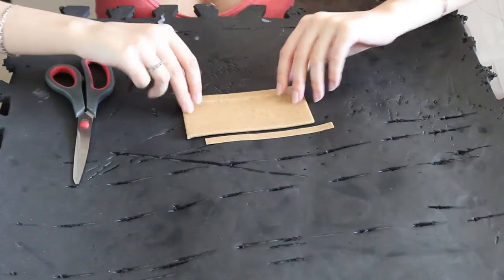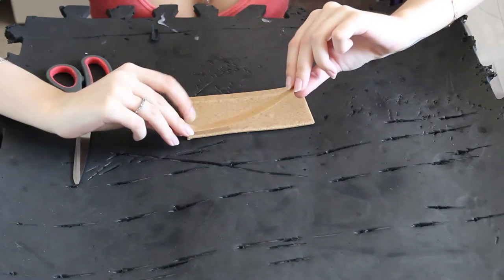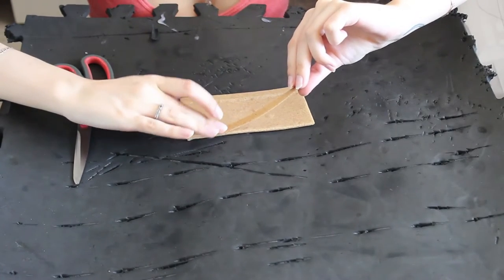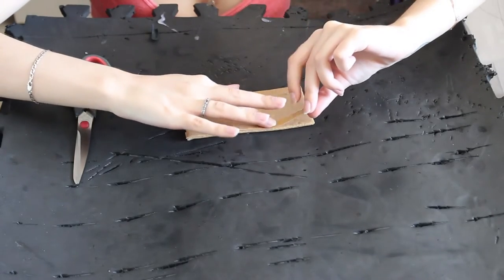When sticking two pieces of worbla together you want to make sure that both pieces have been heated up. The piece that is to be stuck on as well as the piece that it is being stuck to.